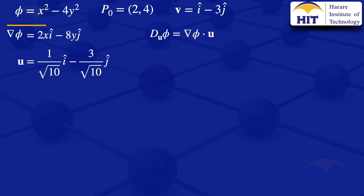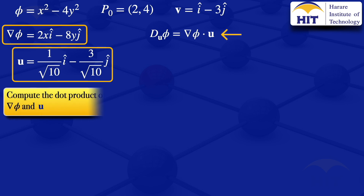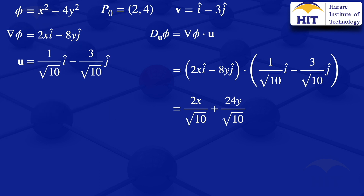We have our grad φ and our unit vector u, and the directional derivative is their dot product. So we compute (2xi minus 8yj) · ((1/√10)i minus (3/√10)j). Multiplying corresponding components: 2x times 1/√10 gives 2x/√10, and minus 8y times minus 3/√10 gives plus 24y/√10. So the dot product is 2x/√10 + 24y/√10.